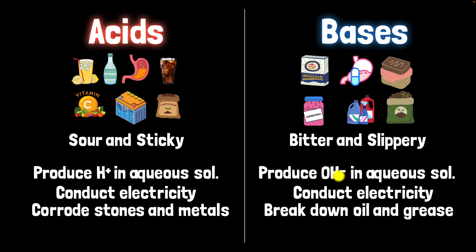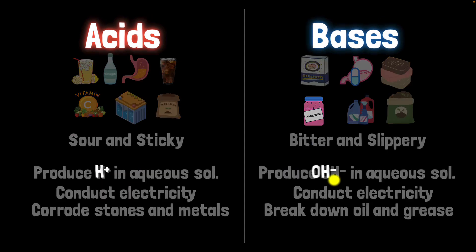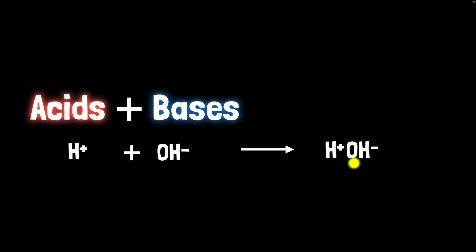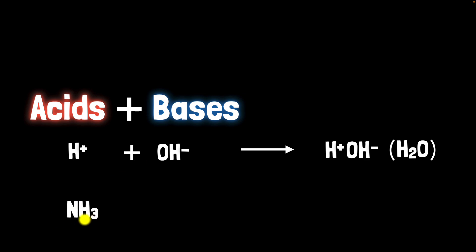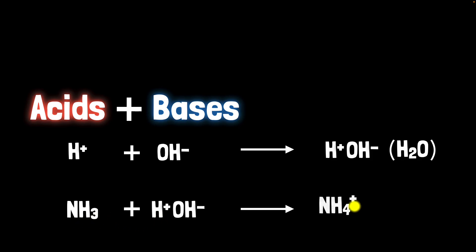Acids produce H+ and bases produce OH-. So what happens when H+ combines with OH-? You get HOH, which is H2O — water! So acids and bases combine to give us water. Another way to think about bases is that they decrease the amount of H+ in a solution, which is the opposite of what acids do. So for those bases that didn't have OH in their formulae — like ammonia — when you put it in water, it removes H+, giving you NH4+, but what's important is that it leaves behind OH-. This is how bases like ammonia still produce OH- indirectly.